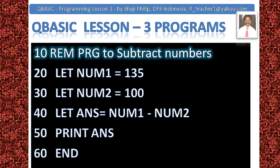At line number 20, we are assigning the value 135 to the variable num1. Similarly, at line number 30, we are assigning 100 to num2. At line 40, we find the answer: ans = num1 minus num2. The difference is stored in ans. At line number 50, we print the answer. Assign the values, find the difference, print the answer — that's all.